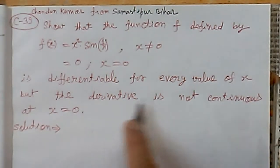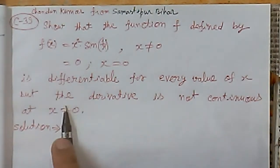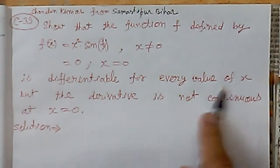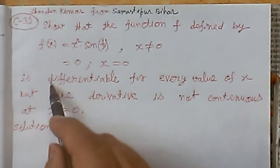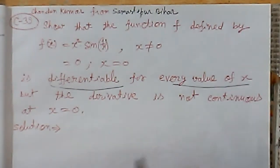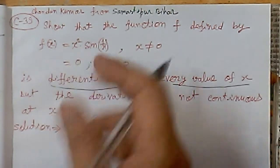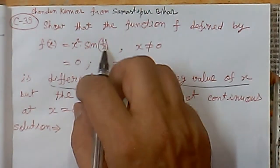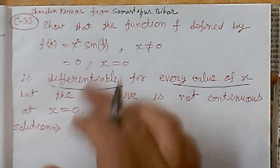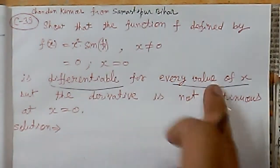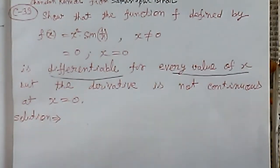The function is differentiable for every value of x, but the derivative is not continuous at x = 0. The critical point is x = 0 because 1/0 goes to infinity at that point. But we will prove the function is differentiable at every point.